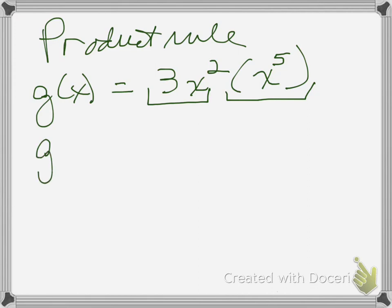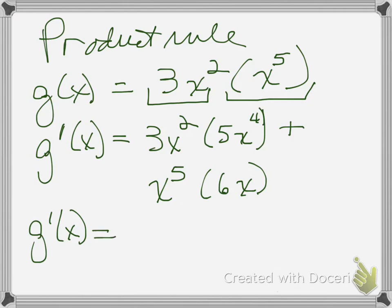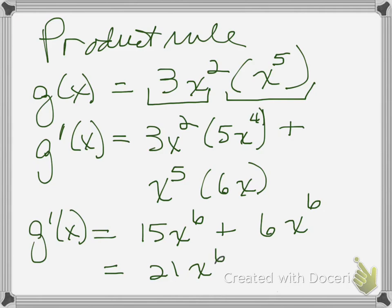So g prime of x is going to equal: left (3x squared) times d-right (5x to the 4th), plus right (x to the 5th) times d-left (6x). Cleaning this up: 3 times 5 is 15, write the base once, add the exponents, plus 6x to the 6th. So I should be getting 21x to the 6th, which is what I would have gotten if I turned g of x into 3x to the 7th. So I know this is all correct.